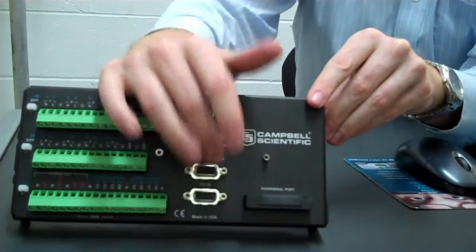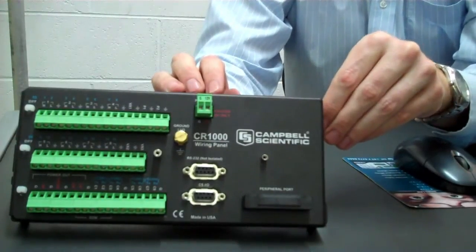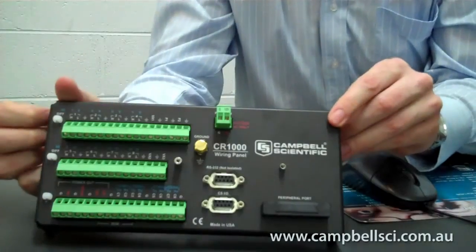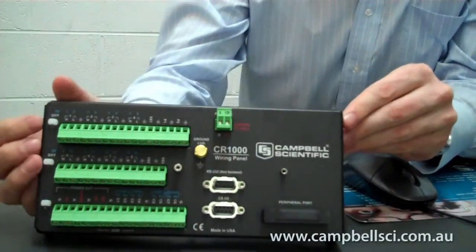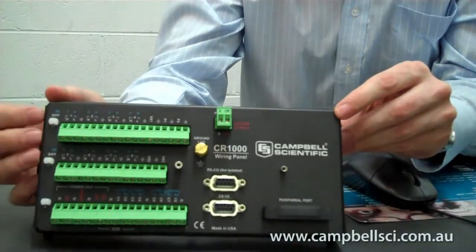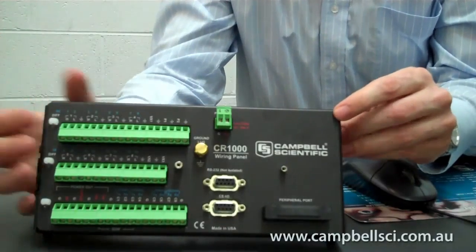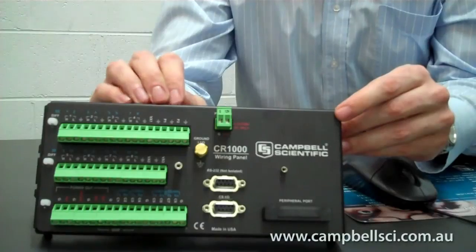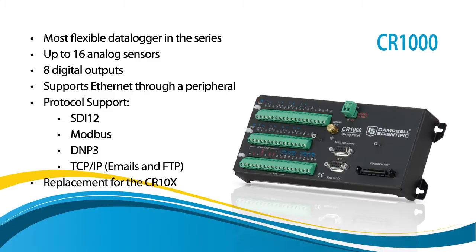Some of the other things on the wiring panel: over here we have two DB9 connectors — one for an RS-232 port and one for a CSIO port. The CSIO port is on a lot of our loggers; it stands for Campbell Scientific Input or Output, so that is to connect only Campbell devices — things like our landline modem, radio modems, and all sorts of Campbell peripherals. The RS-232 port is a standard RS-232 port; we use that to connect to laptops to download data or program the logger, or to connect to PLCs or RTUs. The CR-1000 supports DNP3 and Modbus if you're connecting to a PLC.